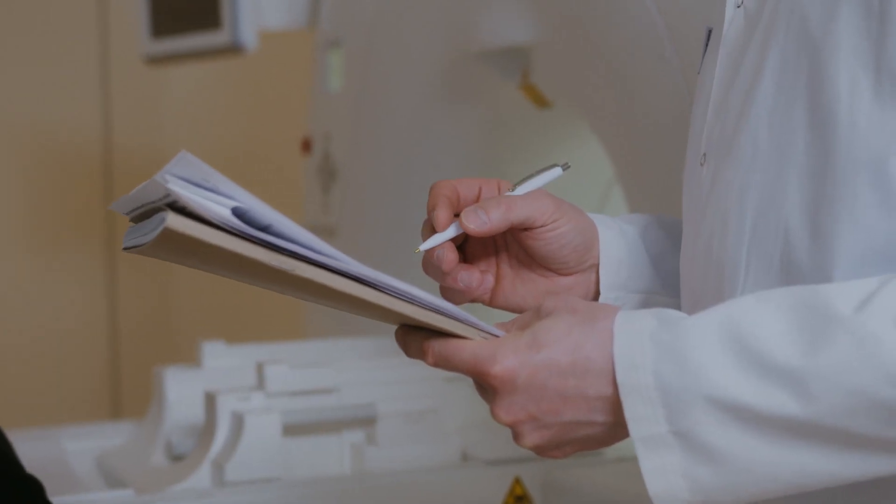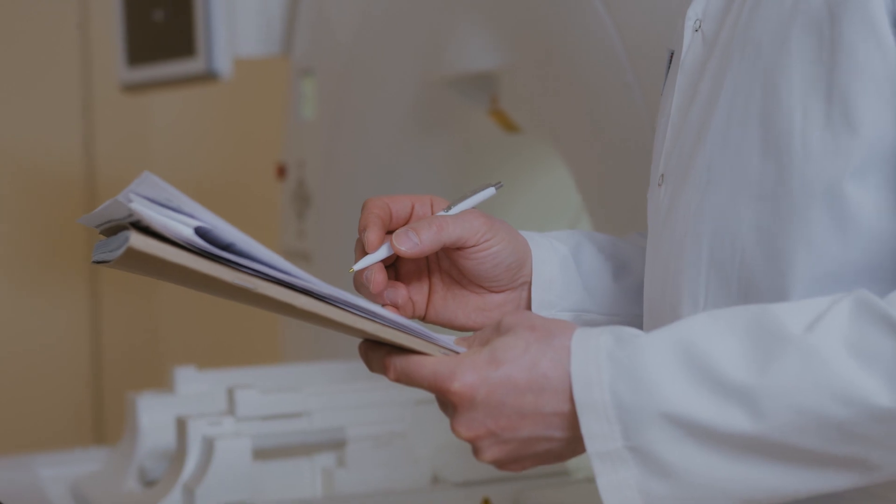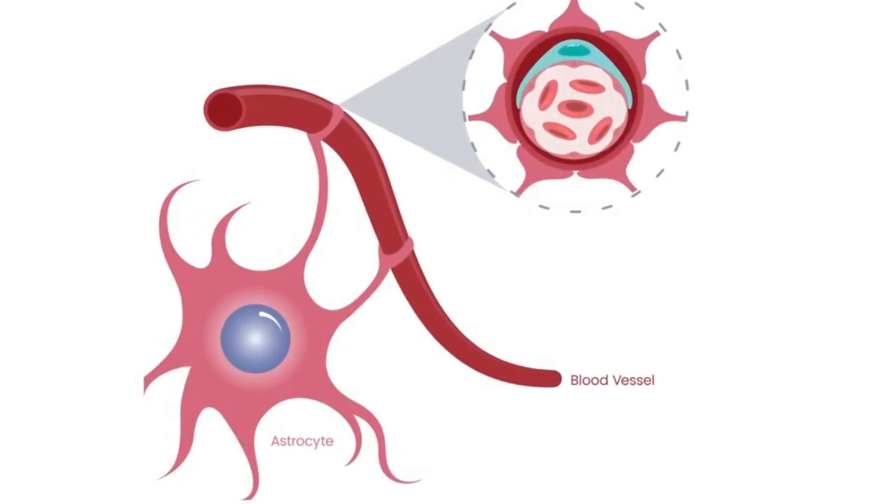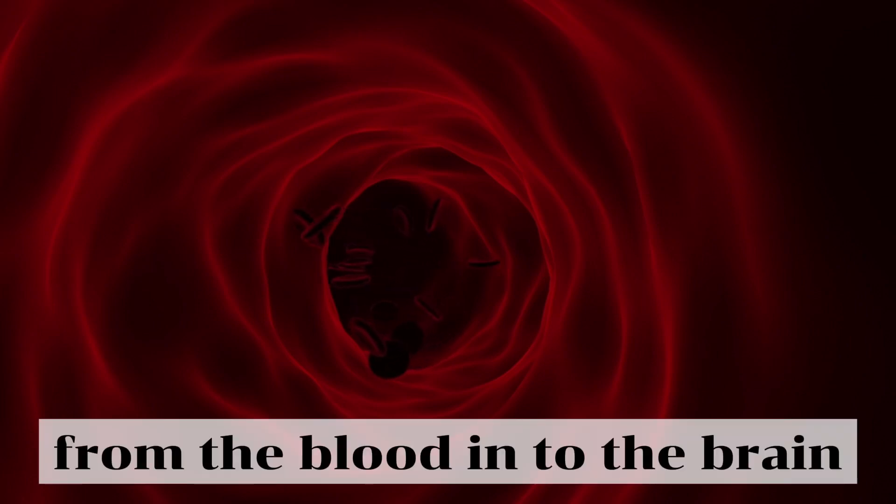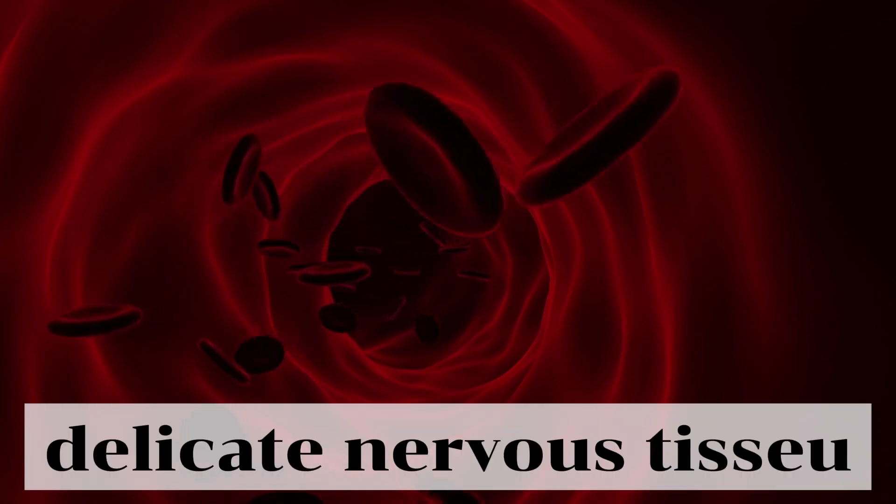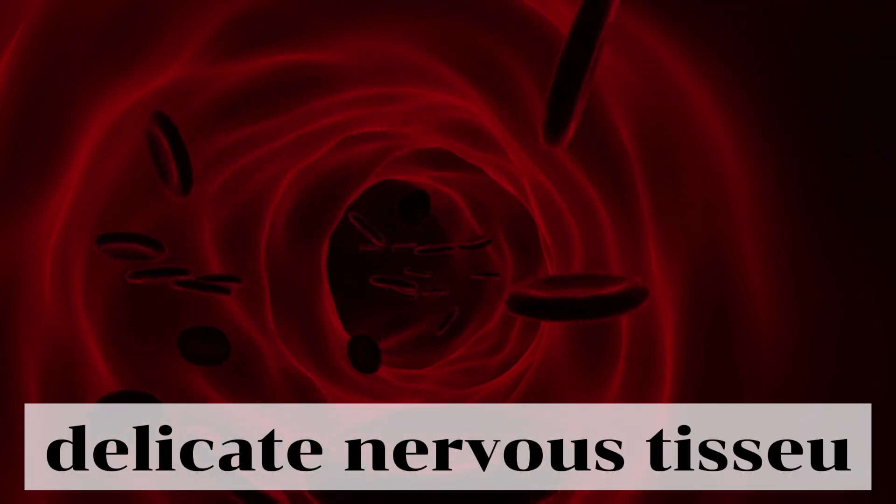But can we also mention another really cool random fact about the testes? Have you ever heard of the blood-brain barrier? This is a barrier that only allows certain substances to pass from the blood and into the brain, essentially creating this protective filter for the delicate nervous tissue. So what does this have to do with the testes?